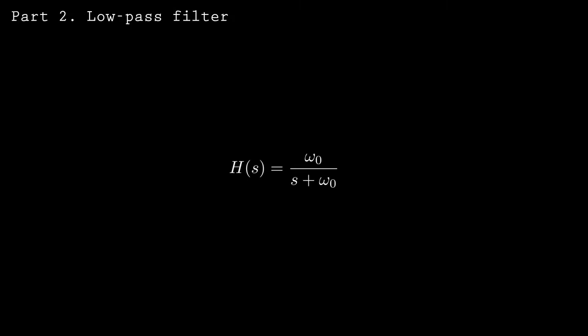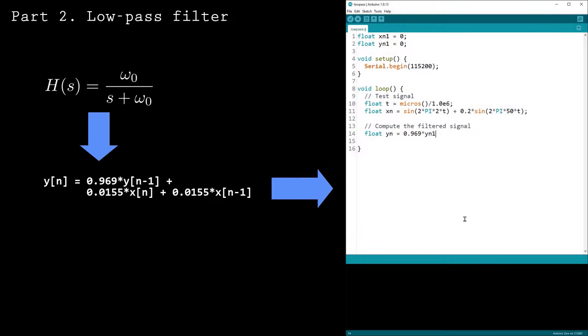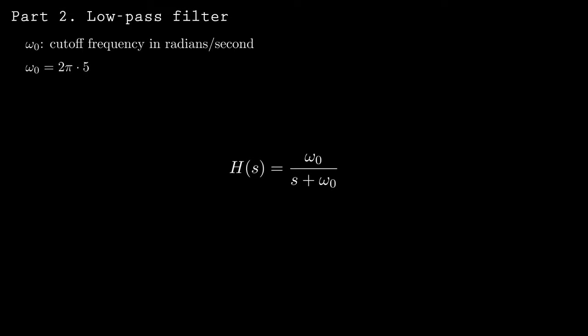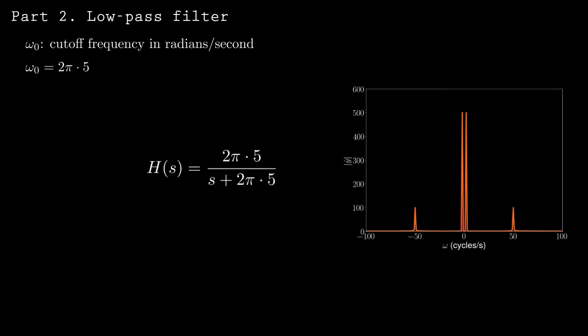A first-order low-pass filter is typically represented by the transfer function omega-zero divided by s plus omega-zero. Later in this video, I'll show you how to convert the transfer function into update equations you can use to implement the low-pass filter on an Arduino. The transfer function has one parameter, the cutoff frequency omega-zero. I'll set the cutoff frequency to 2π times 5 radians per second, producing a cutoff frequency of 5 Hz, which should preserve the 2 Hz signal and attenuate the 50 Hz signal.